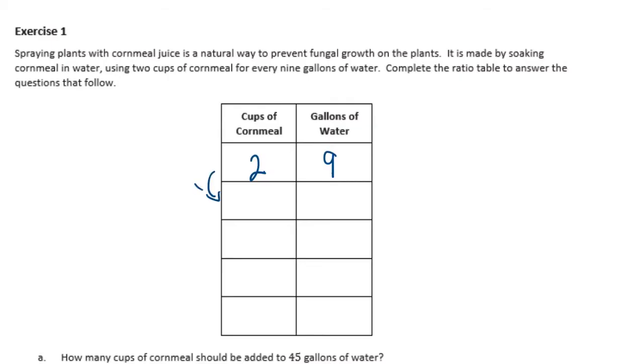Let's start by multiplying by 2. So 2 times 2 is 4. 9 times 2 is 18. So for every 4 cups of cornmeal we need 18 gallons of water. Now if we multiply by 3, 2 times 3 is 6. 9 times 3 is 27. So 6 to 27 is the next ratio. If we multiply by 4, 2 times 4 is 8. 9 times 4 is 36. And one more. Let's multiply by 5. 2 times 5 is 10. 9 times 5 is 45. So 10 cups of cornmeal would need 45 gallons of water.